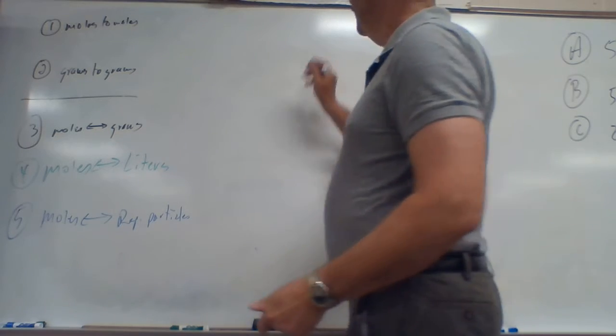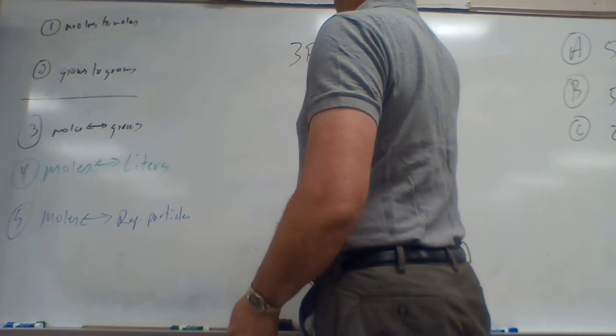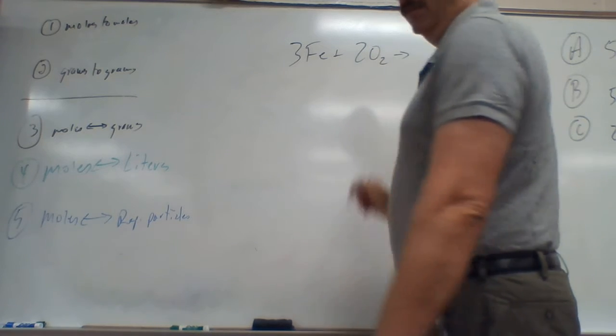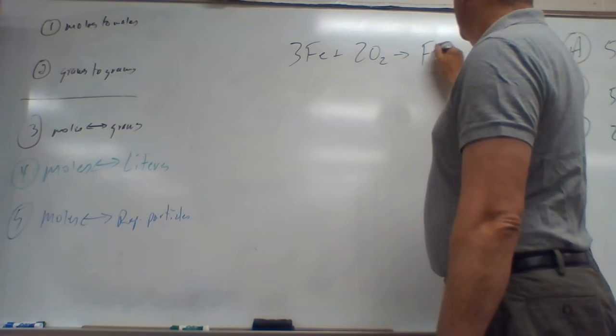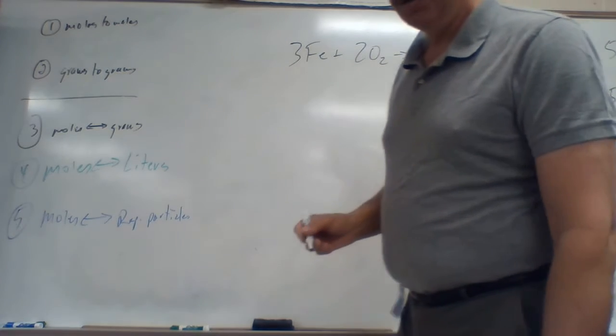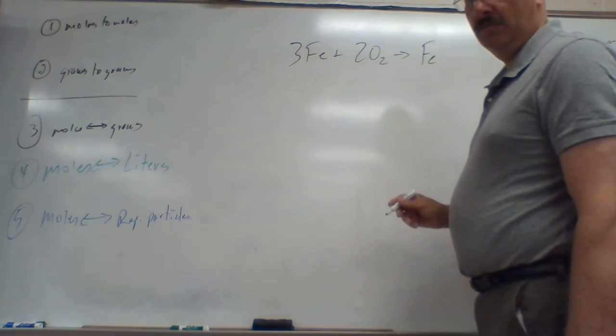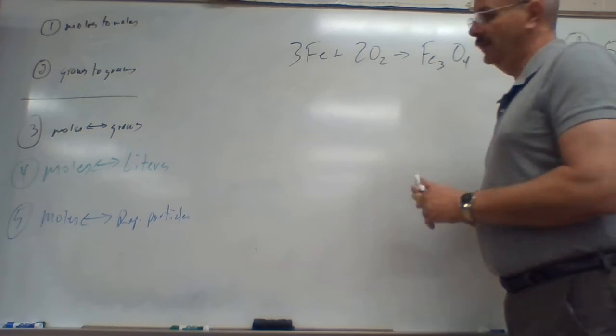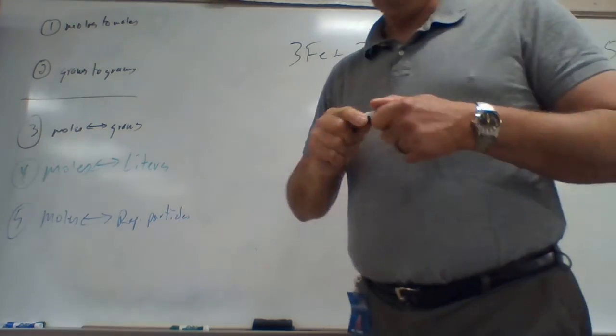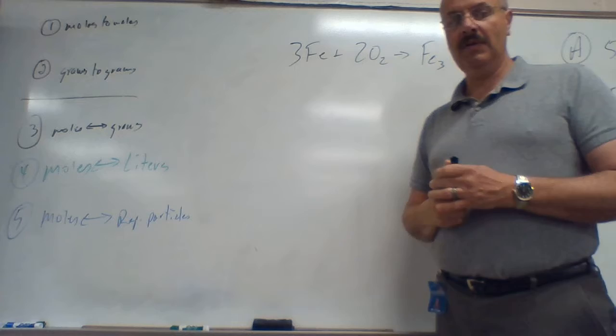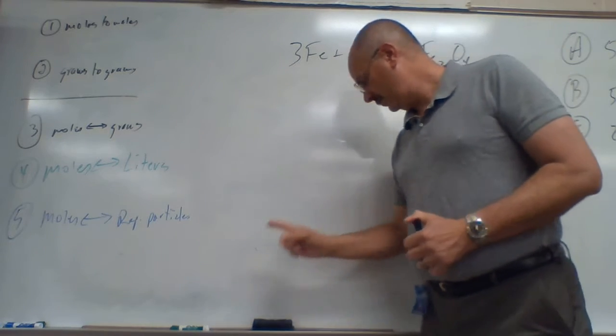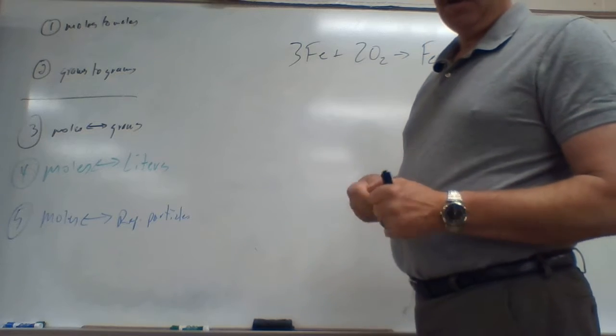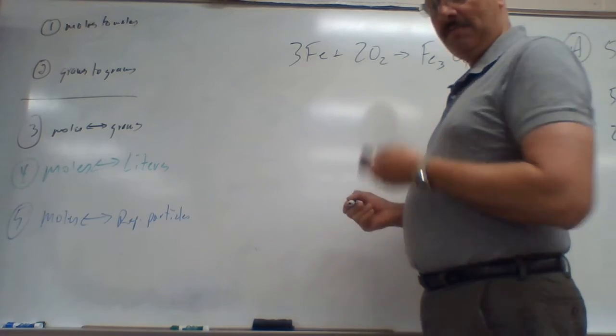The balanced equation was 3Fe + 2O₂ forms Fe₃O₄. So what we got from here is according to the question it says, which one's the limiting reagent if you have 8.54 moles of Fe?